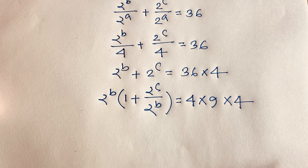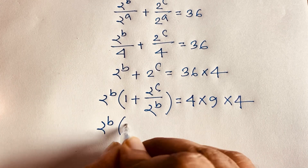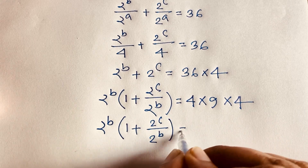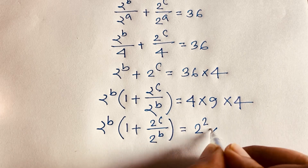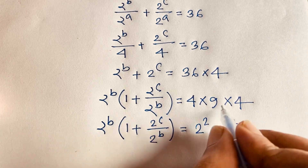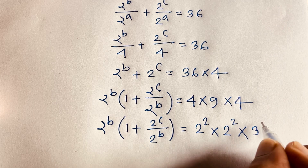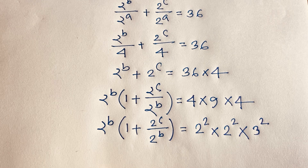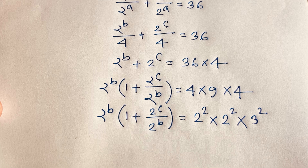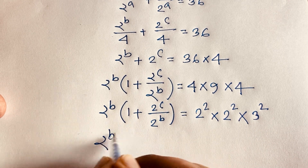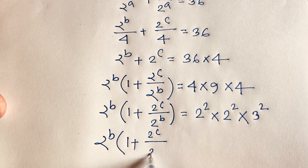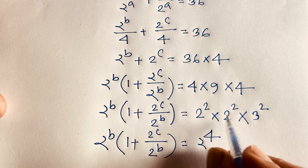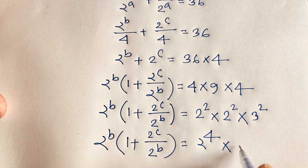Now I can say 2^b times (1 plus 2^c over 2^b) equals 4 times 4 times 9, which is 2^2 times 2^2 times 3^2. Since the bases are the same, adding exponents 2 plus 2 gives 4, so this equals 2^4 times 3^2.